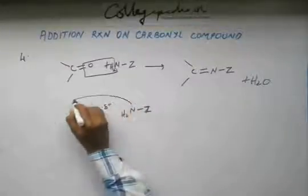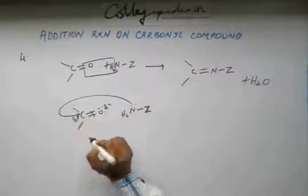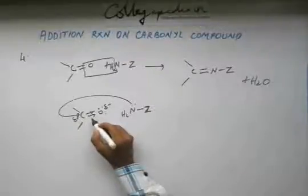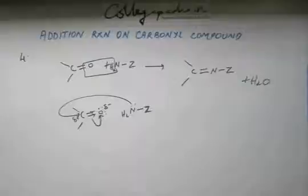So this Nitrogen is going to give its Electron to Carbon, and when Carbon starts to gain Electron from outer source, it will lose Electron from the front into the orbital of Oxygen because it cannot expand its valency. It has to make four bonds. If it's making a new bond, it has to break one previous bond.